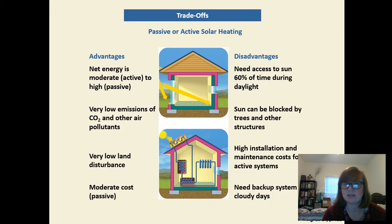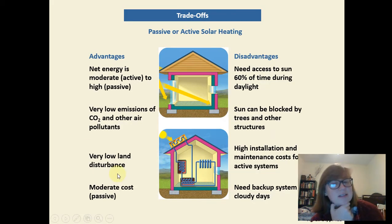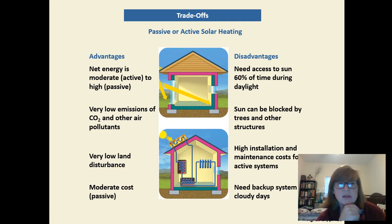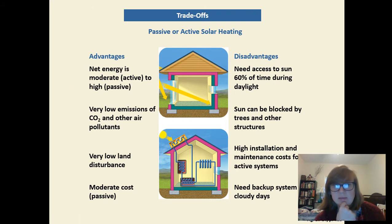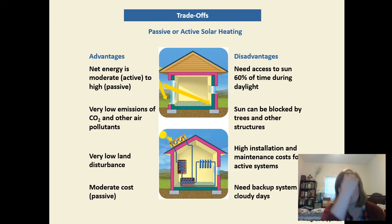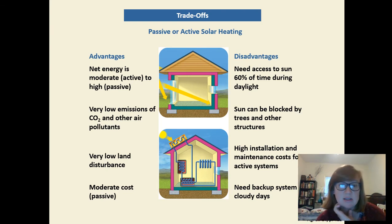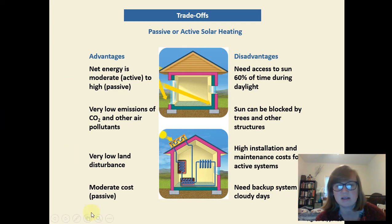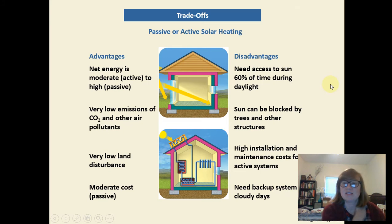Here are the pros and cons — you can pause and look at them. The energy output can be pretty high, there are very low CO2 emissions and air pollutants when using it (emissions come mainly from manufacturing the panels), there's not a lot of land disturbance, and with passive solar the cost is moderate. On the downside, you need access to sun about 60% of daylight hours, so you need to live in a sunny area.